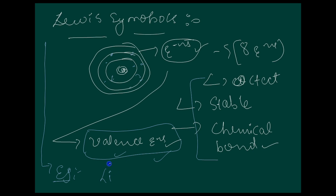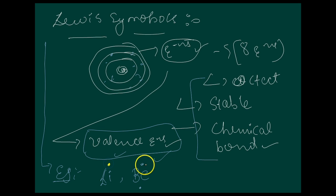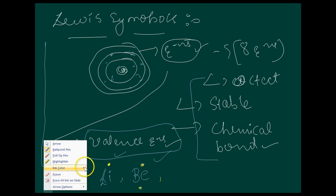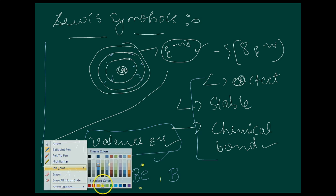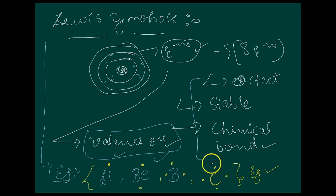For example: lithium has only one outermost electron. Beryllium has two electrons, represented with two dots. Boron has three outermost electrons, represented with three dots. Carbon has four outermost electrons, represented with four dots. By putting the dots around the symbol, we can show the valence electrons — the outermost valence electrons.